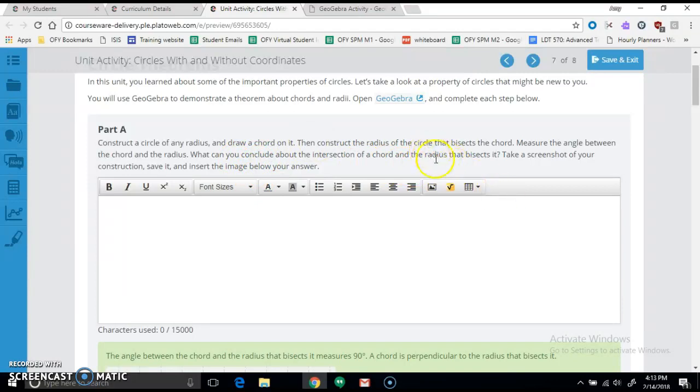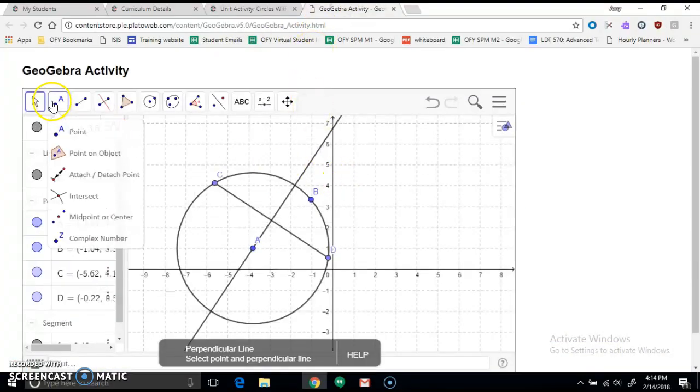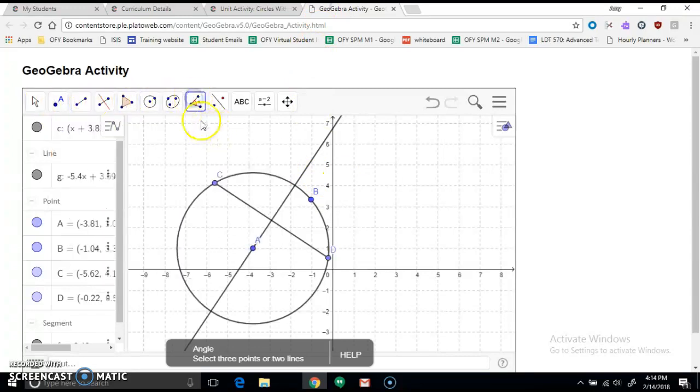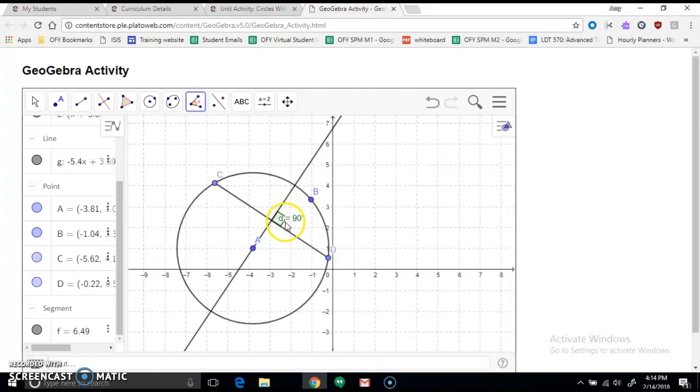What can you conclude about the intersection of the chord and the radius that it bisects? So we're going to measure this angle from here to here, 90 degrees,